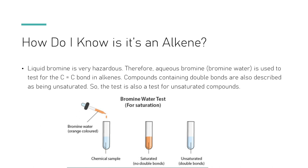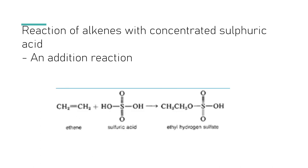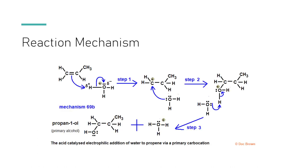The reaction of alkenes with concentrated sulfuric acid is an addition reaction. This is one of the reactions where you don't need to know the mechanism per se, but it's there. It will produce an alcohol — a primary alcohol — such as propanol. When alkenes react with acids or water in an acidic medium, they tend to produce alcohols.